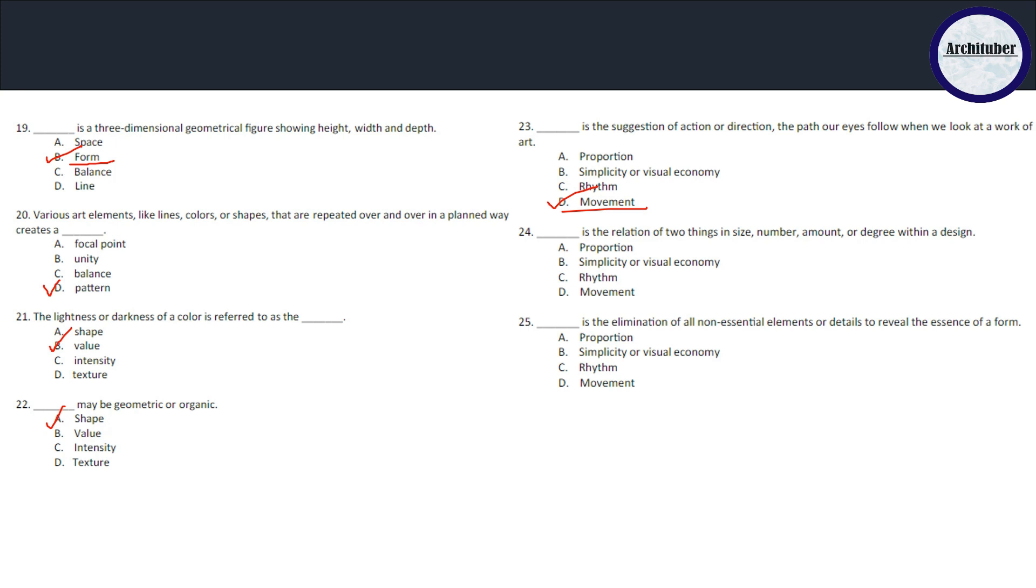The elimination of non-essential elements or details to reveal the essence of a form - is it proportion, simplicity, rhythm, or movement? It is visual economy or simplicity.